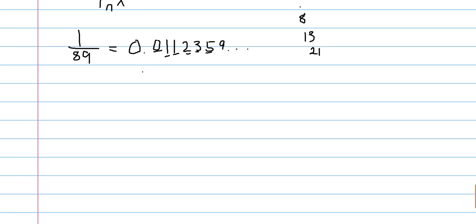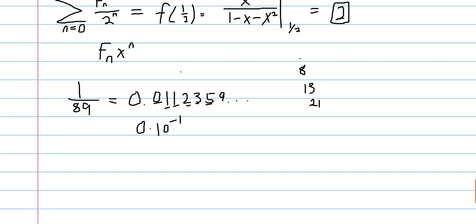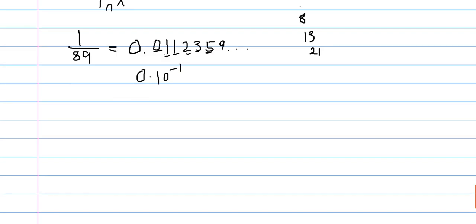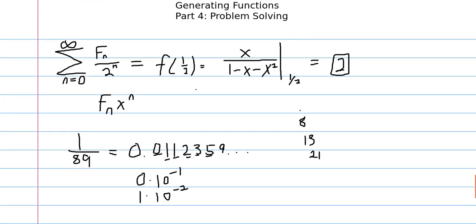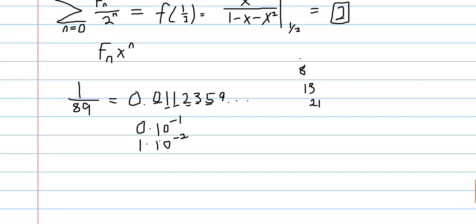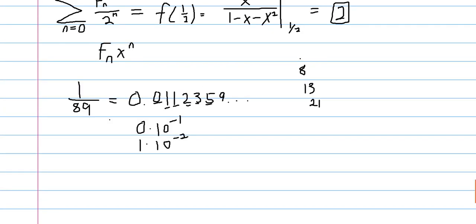Sort of think of this zero as zero times ten to the negative one. And here we have one times ten to the negative two. And we're sort of adding all these up, we're adding up each decimal place, and then we have overlap. But the point is, we have something of the form a Fibonacci number times a power.